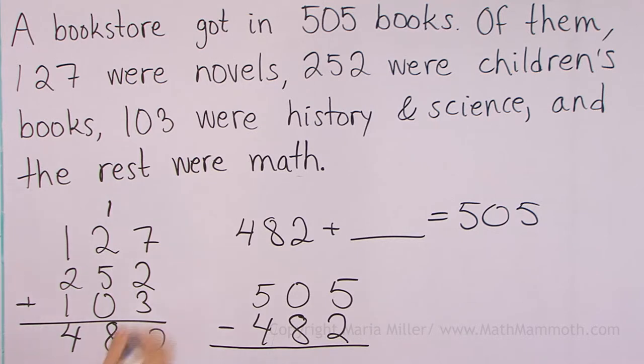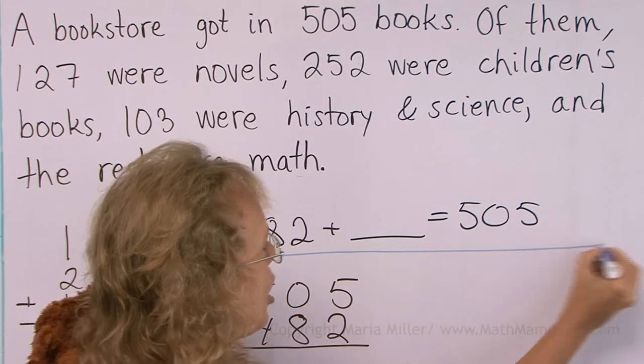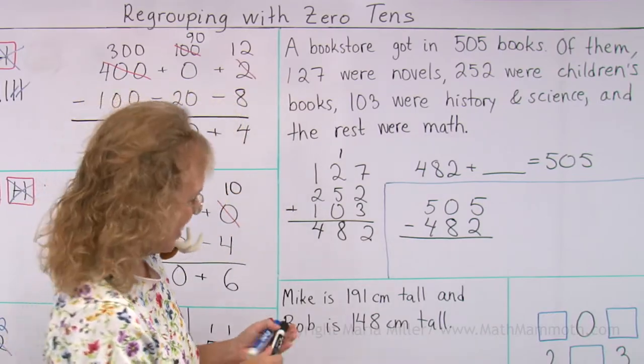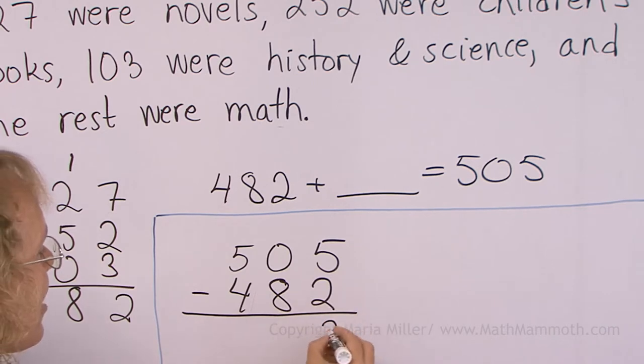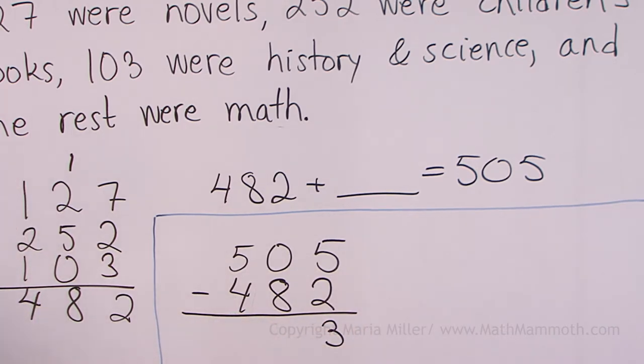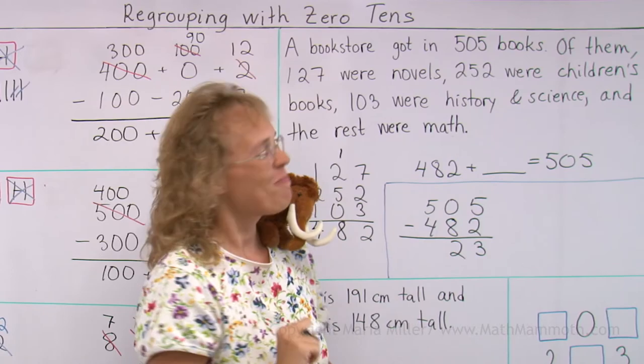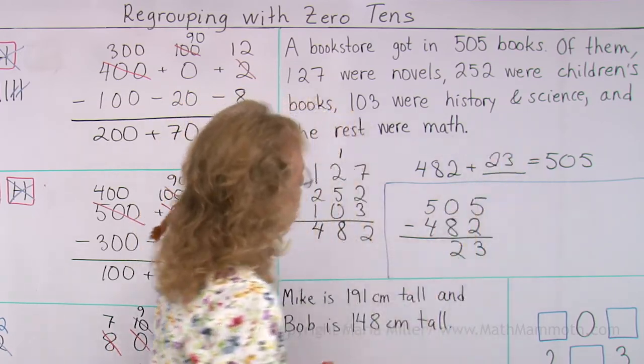Can you do that? While waiting for me to solve it, can you solve it real quick? Try. We are lucky. 5 minus 2 is 3. We don't have to regroup. And then over here, you can think of this as 50 minus 48, which is 2. So that was quick. So, 23 math books.